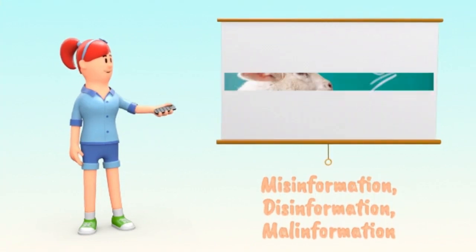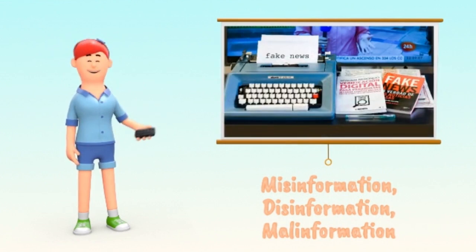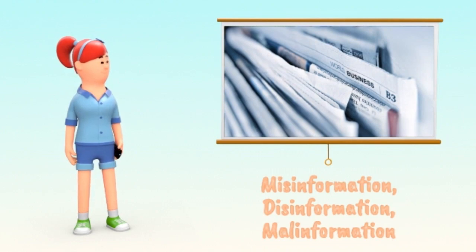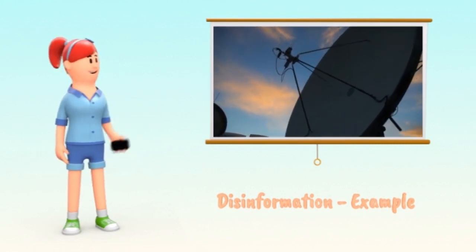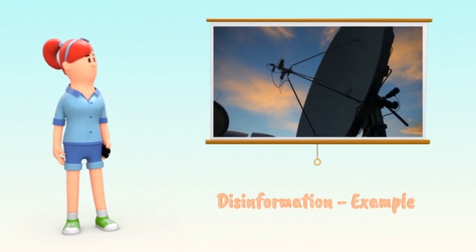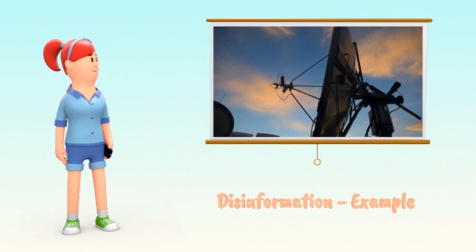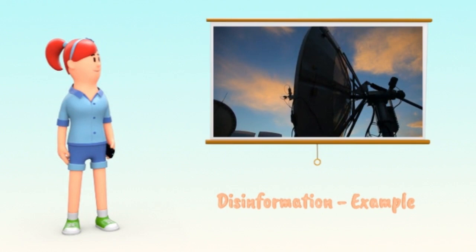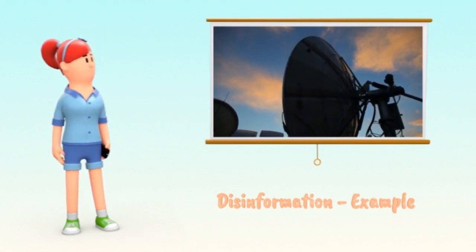Next is disinformation: fabricated or deliberately manipulated audio or video content, as well as deliberately spread rumors and conspiracy theories. The infodemic surrounding the global coronavirus crisis is rich with examples. One of them is the rumor that the virus is spreading through antennas for 5G mobile coverage, which gained widespread popularity and even led to the destruction of cell towers by frightened citizens in countries such as the United Kingdom.